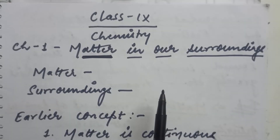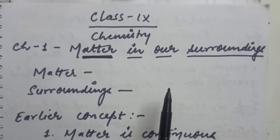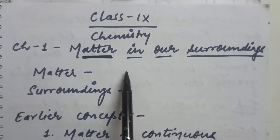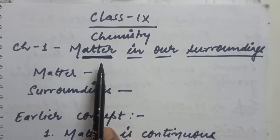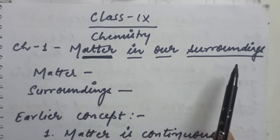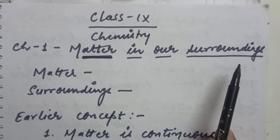Our first chapter is Matter in Our Surroundings. Now there are 2 important things. The first one is matter and the second one is surroundings.